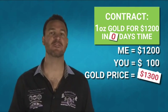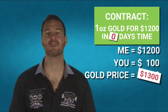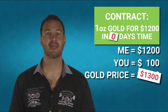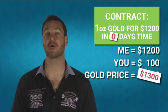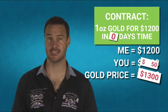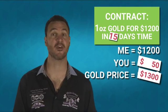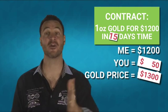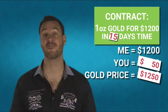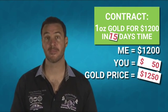Traditionally, the more stable the commodity, the less security there needs to be. But what happens if your security is not enough? Let's say you only deposited $50 as security in the above example, and after 15 days or so, the price of gold has moved to $1,250 per ounce.